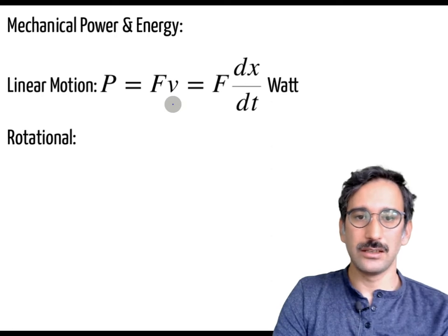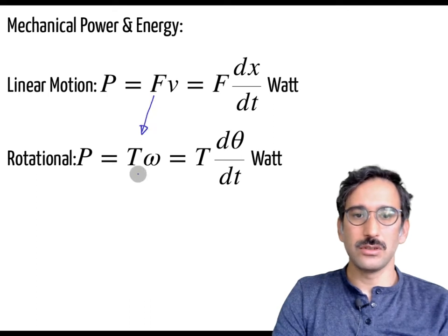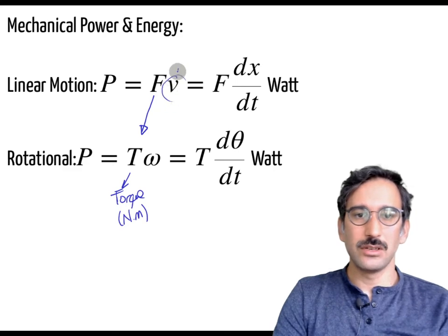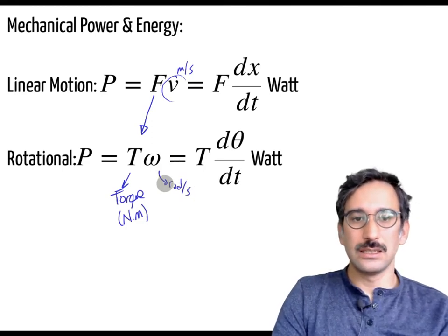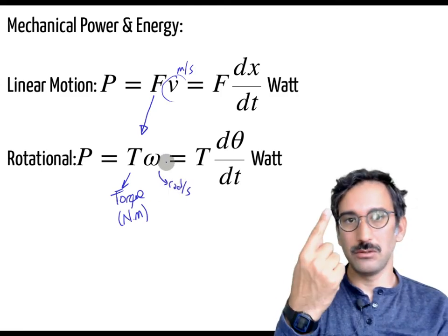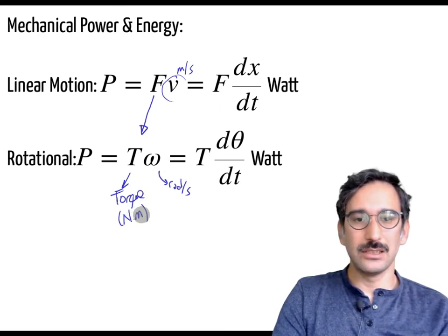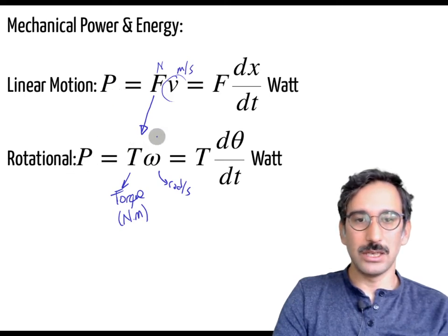In rotational systems there is a direct analogy with linear systems. We still have power, but instead of force we have torque, which is in newton-meters. Instead of meters per second we have radians per second. Radians per second gives newton-meters divided by seconds, which again equals watts — the same unit of power.